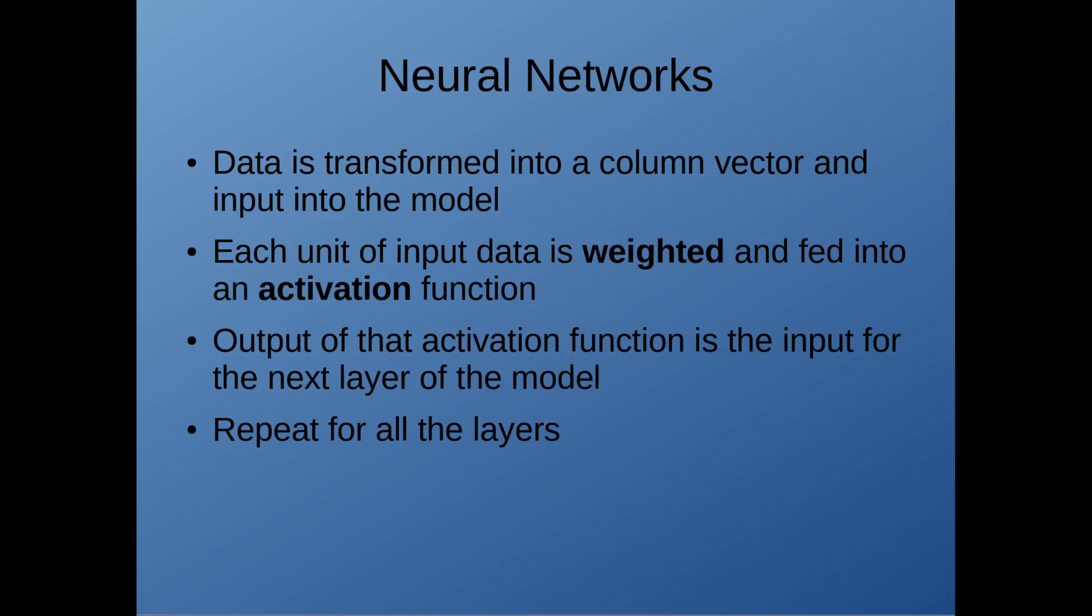Related to logistic regression is the ever-popular neural network. Here we take our input data and transform it into a column vector. We do this because the neural network is an actual mathematical model of how we think neurons in the brain work. Each unit of that input data is weighted and fed into an activation function which just so happens to be the sigmoid function from logistic regression. And then the output of that activation function is then the input of the next layer of the model. You simply feed this data forward through the model until you get an output.